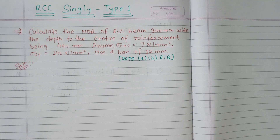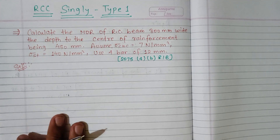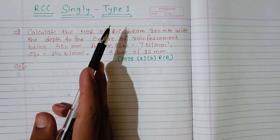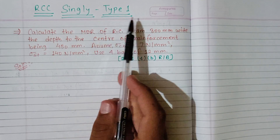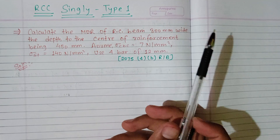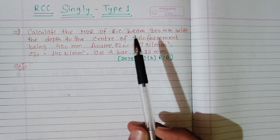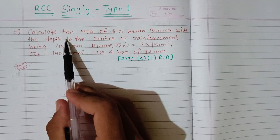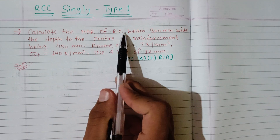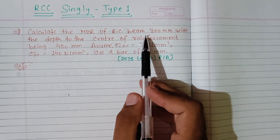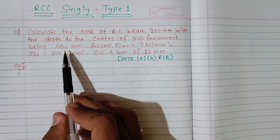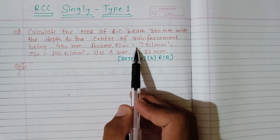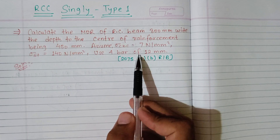Type 1 question: how you can calculate the moment of resistance of an RCC beam 300mm wide, the depth of the center of the reinforcement being 450mm. Assume sigma cbc is equal to 7 newton per mm square, sigma st is equal to 140 newton per mm square. Use 4 bars of 12mm diameter.